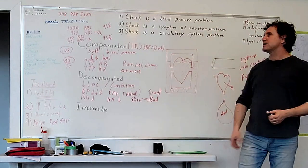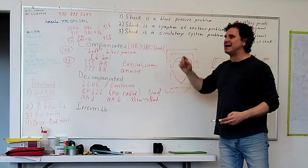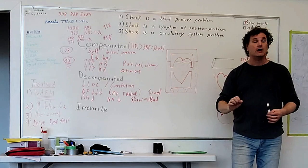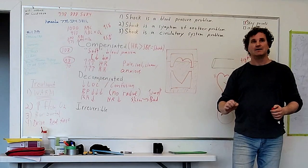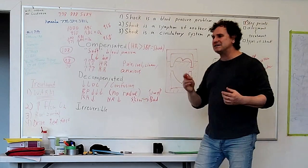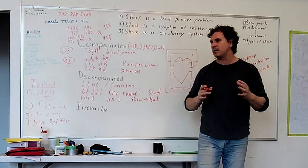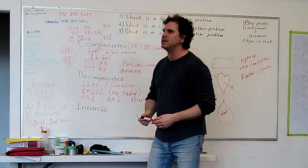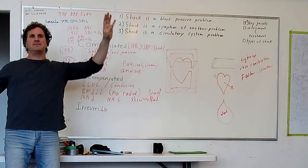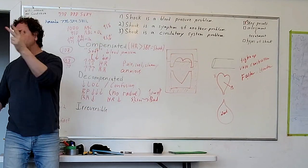So, once again, three main points. Shock is a blood pressure problem. Shock is a symptom of another problem — can we reverse it? No. Doctors might. And it's a circulatory system problem. If we suspect someone is in shock, four things: keep them warm, high-flow oxygen, keep them horizontal, and drive. With these patients, you need to be off scene in 10 minutes with everything in place, no matter how complex the packaging.